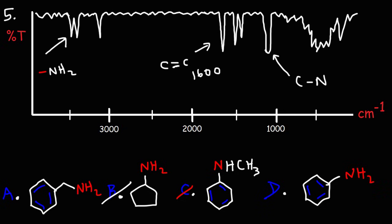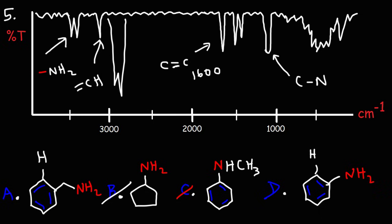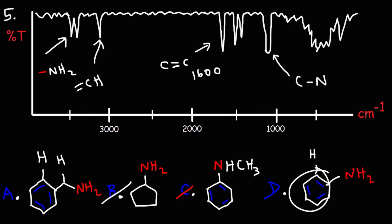There is one signal that can help us get the answer. This is the double bond C-H stretch, which can be found in alkenes but also in benzene rings — both answer choices A and D have that. To distinguish between A and D: what we're missing is the alkane C-H stretch at 2900. Answer choice A has the alkane C-H stretch, but answer choice D doesn't have it. So because we don't have that signal at 2900, we can eliminate A, and answer choice D is the right answer.